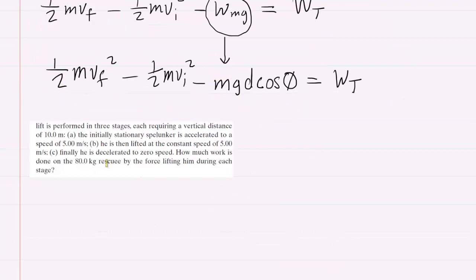Now we've repasted the question below so we can remember what the information is. The distance traveled is 10 meters. The initial velocity for part A, because the spelunker is initially stationary, will be 0 meters per second. And then he's accelerated to a final speed of 5 meters per second.